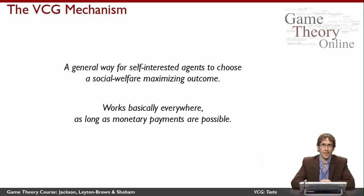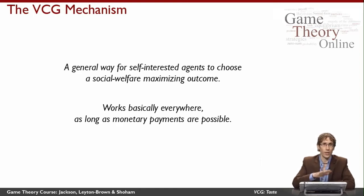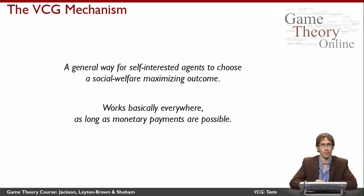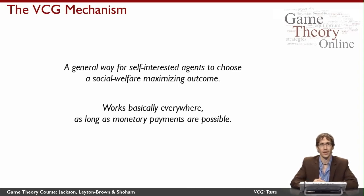The great success of the VCG mechanism is that telling the truth for the agents is a dominant strategy, so it's a really strong kind of implementation. The agents really will want to tell me the truth, and they don't even have to think about what the other agents will do. It's simply the right thing for every agent to tell me the truth about their own valuation, and then if I run the VCG mechanism, the payments will be such that the agents will feel like they've done the right thing.